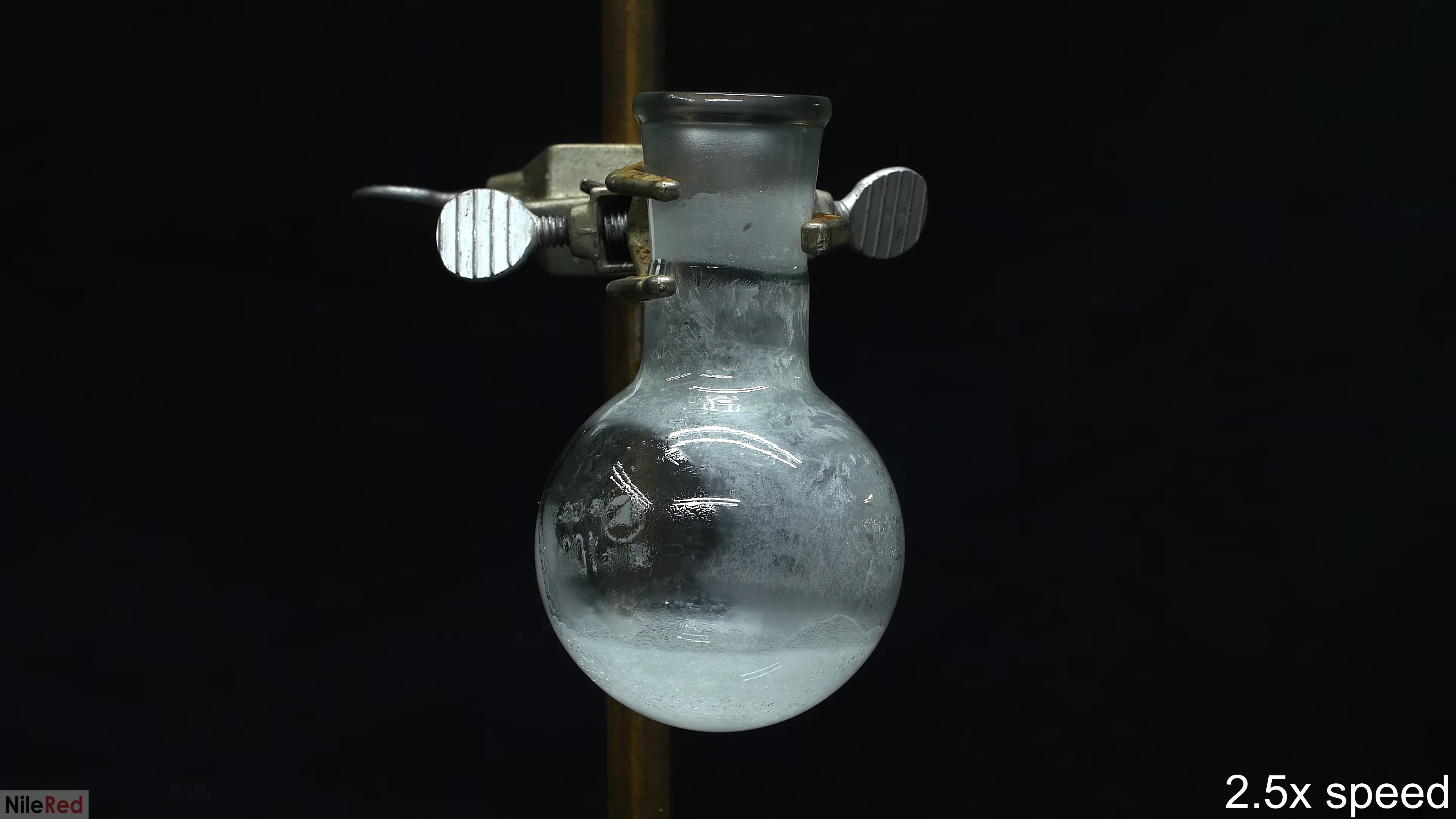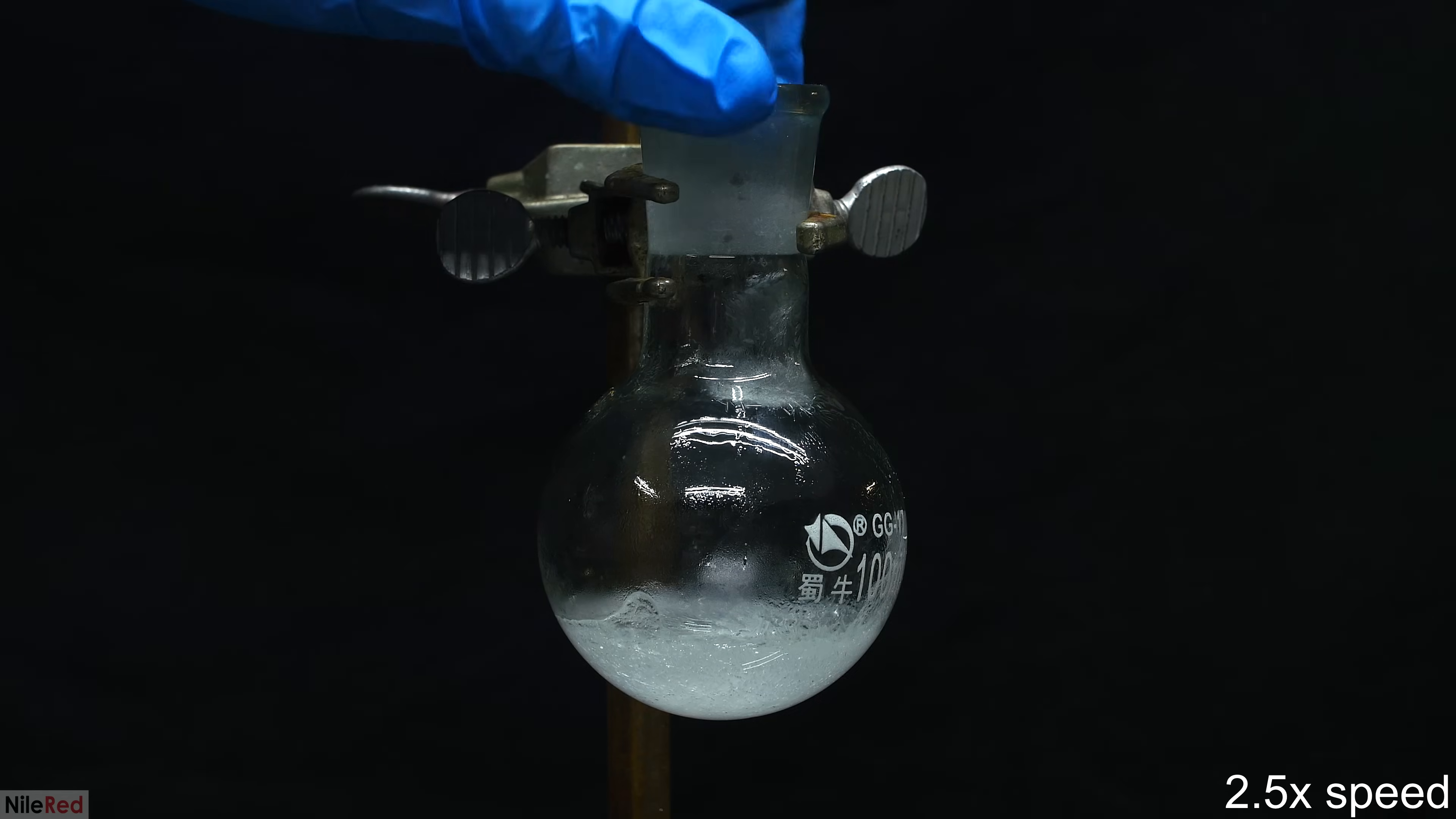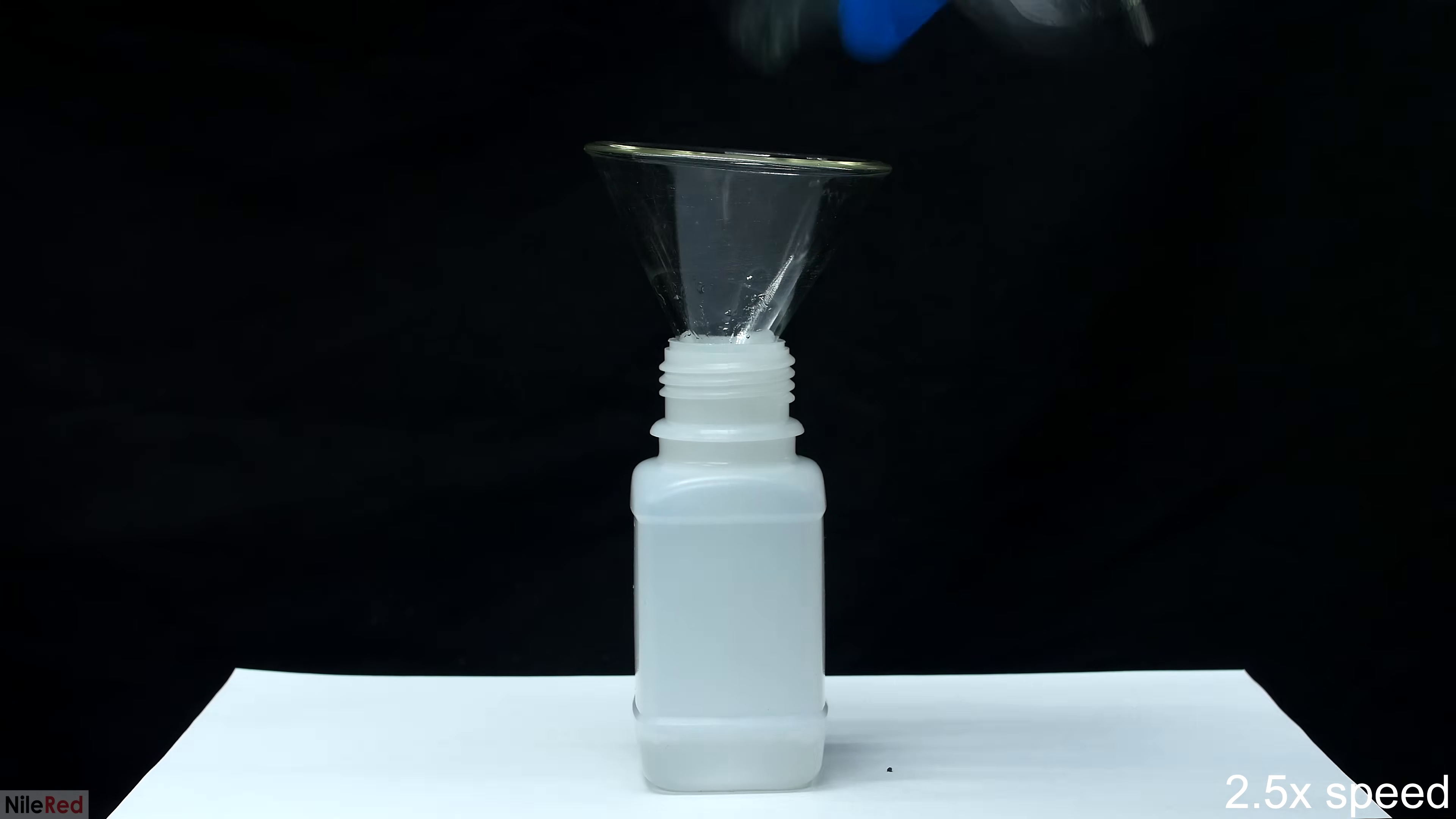Because everything froze in the receiving flask, we're going to have to melt the phenol to transfer it. Using a heat gun that you can't see off screen, I shoot the flask and the phenol very quickly liquefies. I heat up the phenol well above its melting point, and then I quickly transfer it to a bottle.